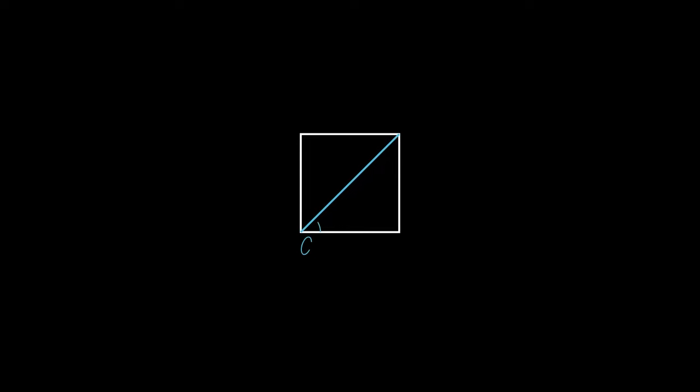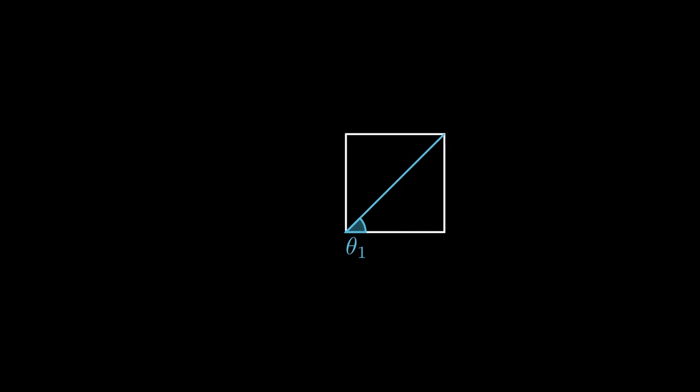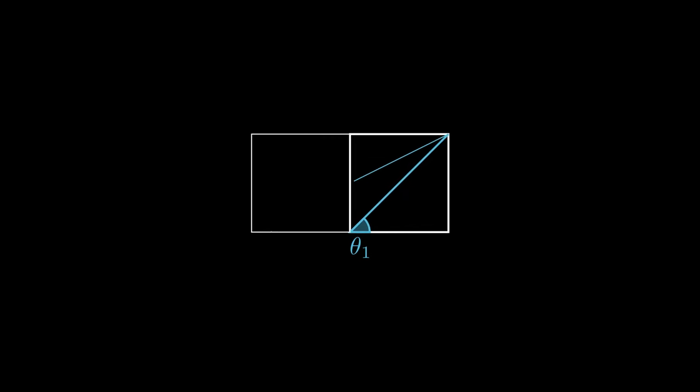Draw a square, connect these two corners, and call this angle theta 1. Beside this square, draw another square, connect these two corners, and call this angle theta 2.